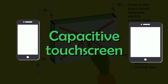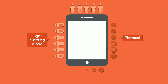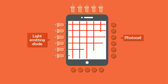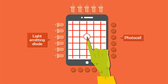The next, less common and less precise one is the infrared touchscreen system. It consists of LEDs and light-detecting photo cells arranged on opposite sides of the screen. The LEDs shine infrared light in front of the screen, a bit like an invisible spider's web. If you touch the screen at a certain point, you interrupt two or more beams, and the controller finds the exact location of the touch to carry out the corresponding function.